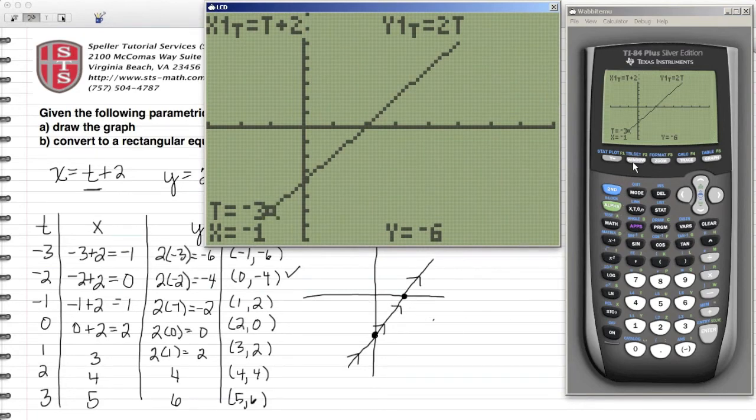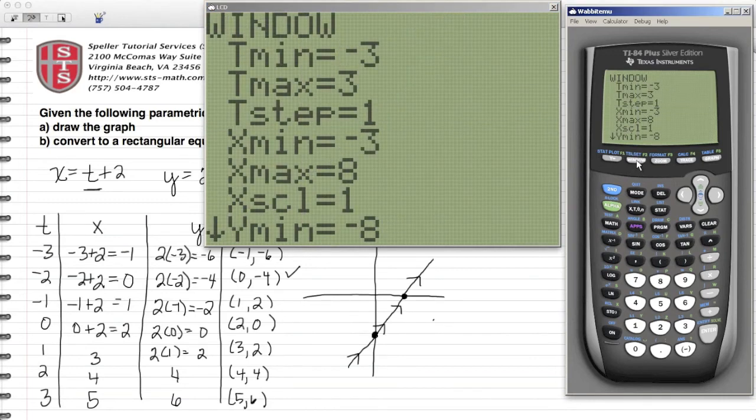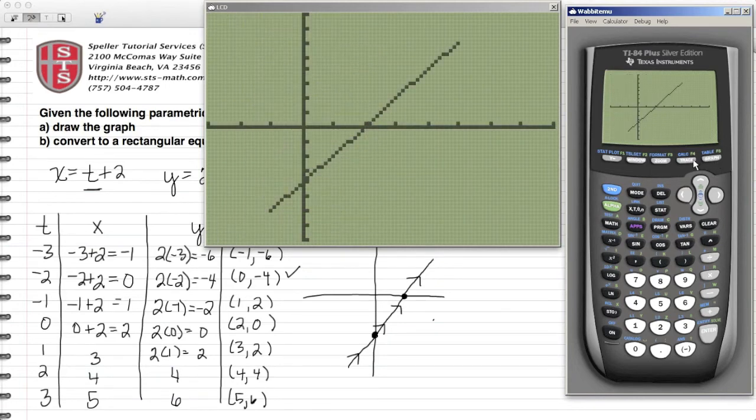I've already set this up, but what you would do is click on your window button. On your window button, you see I set the minimum value for T to be negative 3, the maximum value for T to be positive 3, and I said T to move in increments of 1. Let's go ahead and go back to the graph and then click on trace again.